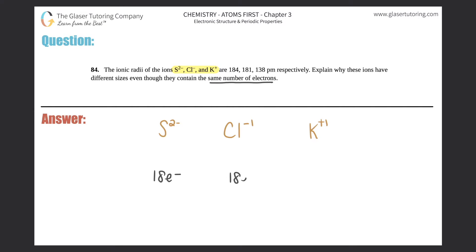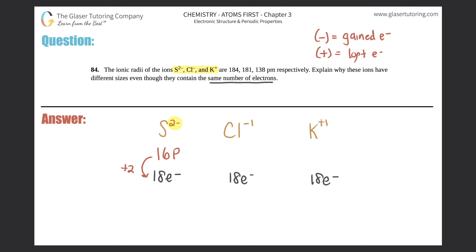They all have 18 electrons. For sulfur: it has 16 protons, and a 2 minus charge means it gained electrons, so 16 plus 2 equals 18. For chlorine: atomic number 17 protons, plus 1 gives 18. For potassium: 19 protons, and it lost one electron because it has a plus one charge, so 19 minus 1 equals 18.